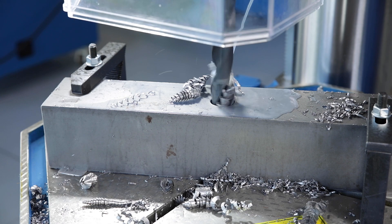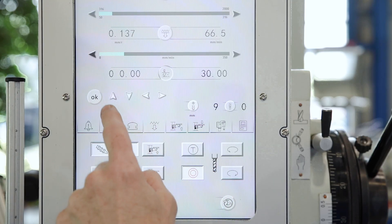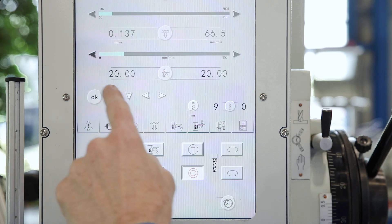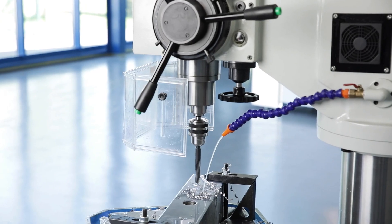The drilling depth start is also set electronically. The selected value and the current position are displayed during editing. When the pre-selected drilling depth is reached, the quill automatically moves back to the starting position.